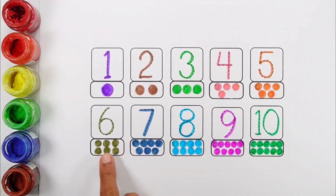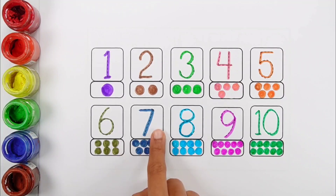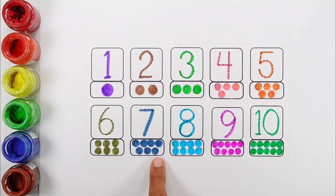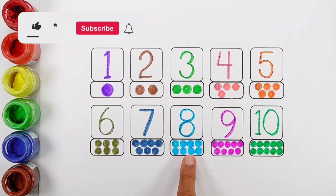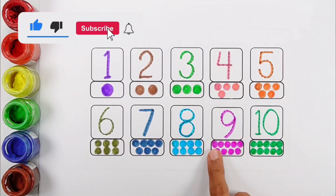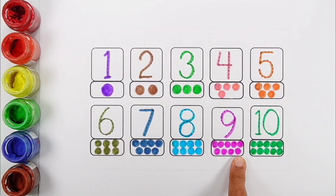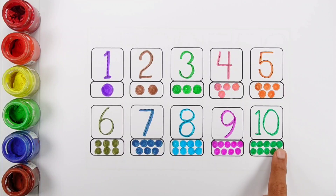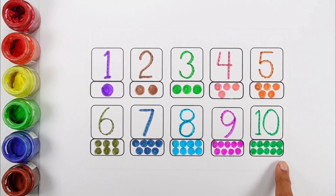Six — one, two, three, four, five, six. Six circles. Seven — one, two, three, four, five, six, seven. Seven circles. Eight — one, two, three, four, five, six, seven, eight. Eight circles. Nine — one, two, three, four, five, six, seven, eight, nine. Nine circles. Ten — one, two, three, four, five, six, seven, eight, nine, ten. Ten circles.